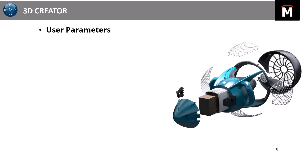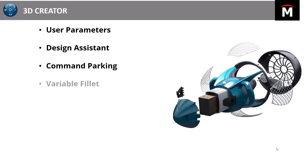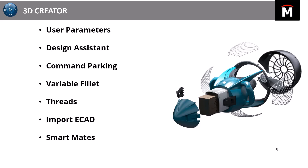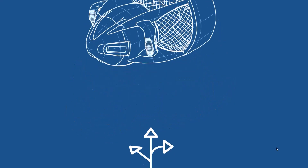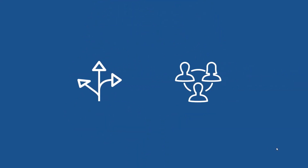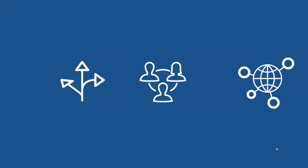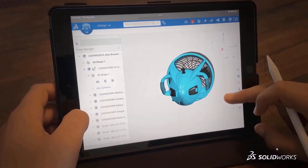We're going to see enhancements to user parameters, the design assistant, command parking, improvements to variable fillets, thread tools, the new functionality to import ECAD data using IDF file formats, and smart mates with the mate helper. As we jump into using XDesign, we're going to see how we can communicate with multiple people at our company using a lot of these online and connected tools.